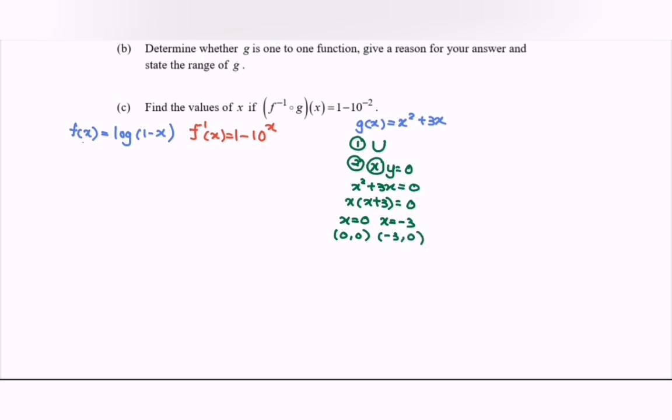For the y-intercept, when x equals 0, the value of y equals 0. So the coordinate is (0, 0).